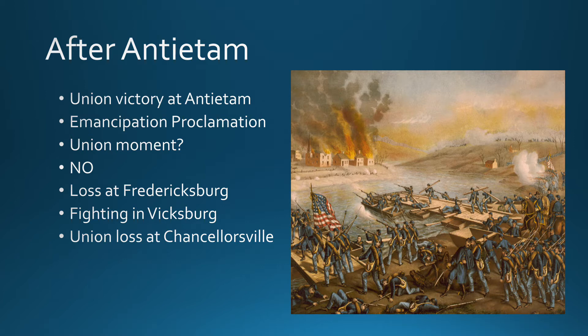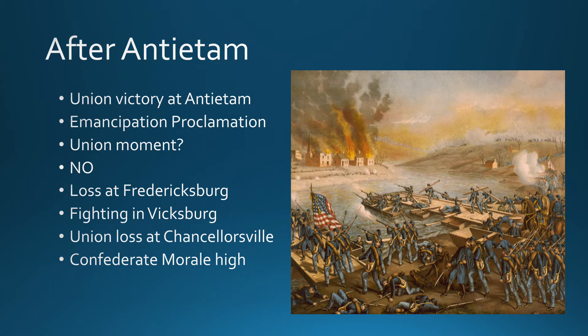Chancellorsville is another loss for the Union — extremely disappointing because the Union had two times as many men as the Confederacy there. The victory at Chancellorsville is probably Robert E. Lee's best stroke of genius, showcasing really impressive commanding and military skills. As we're hitting into 1863, Confederate morale is high. They've had big victories and recovered from the blow at Antietam and the Emancipation Proclamation.